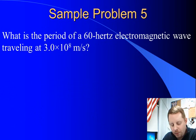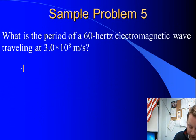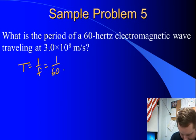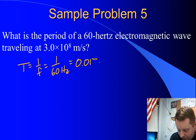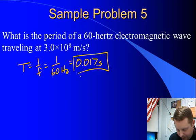Let's try one more. What is the period of a 60 hertz electromagnetic wave traveling at 3 times 10 to the 8 meters per second? Well, if we're given the frequency, period is just 1 over frequency, or 1 over 60 hertz, which will be 0.017 seconds.